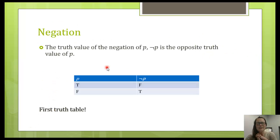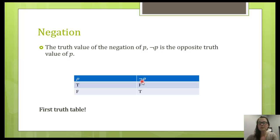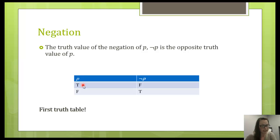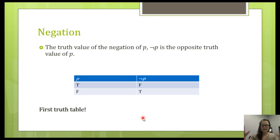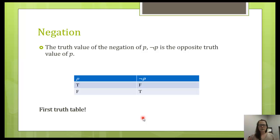This is our first truth table. In this case, we only have one atomic proposition. So we start with our atomic proposition — just the singular one without any operators — and then we do whatever operations we need to do on it. We're taking P and negating it. We start by listing our atomic proposition, and remember all propositions are either true or false. So if we want to list all possible truth values for P, we need to list true and false. If we negate it, we just have the opposite truth value.